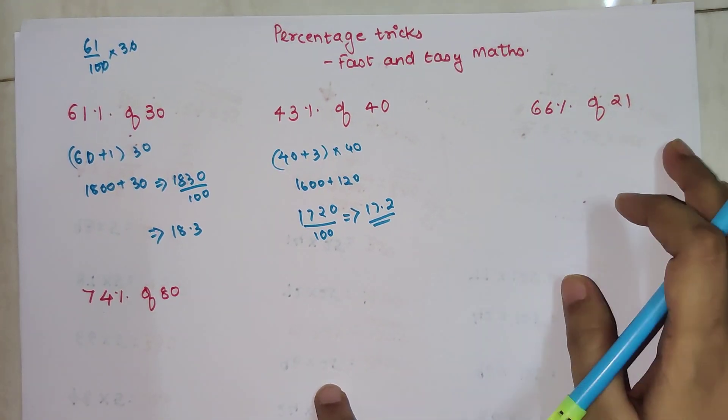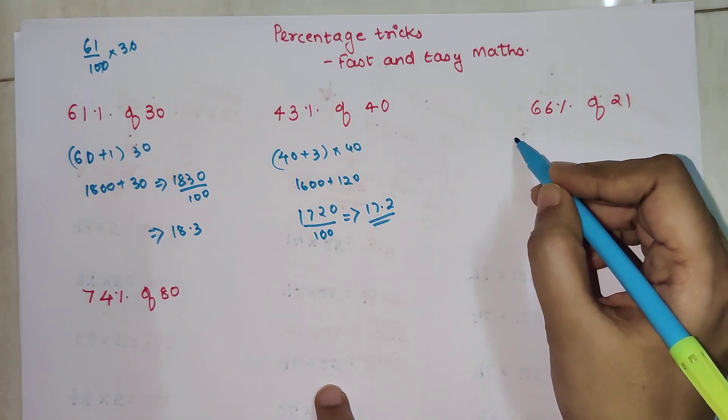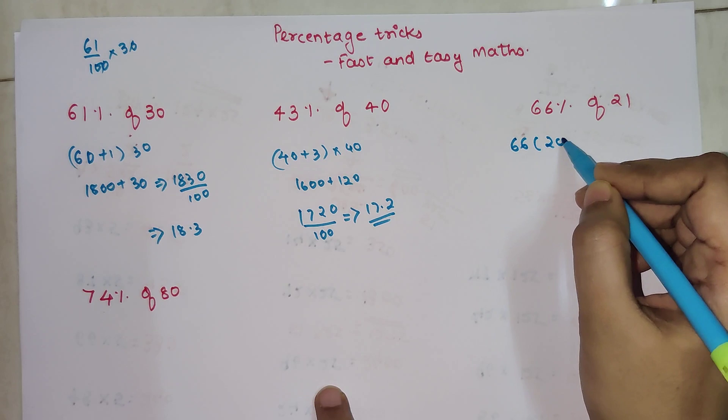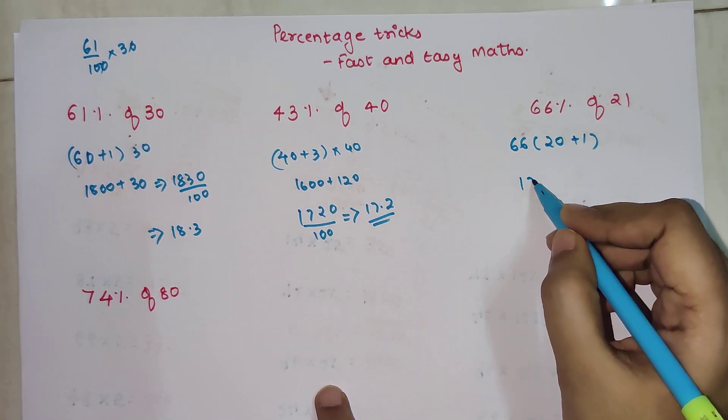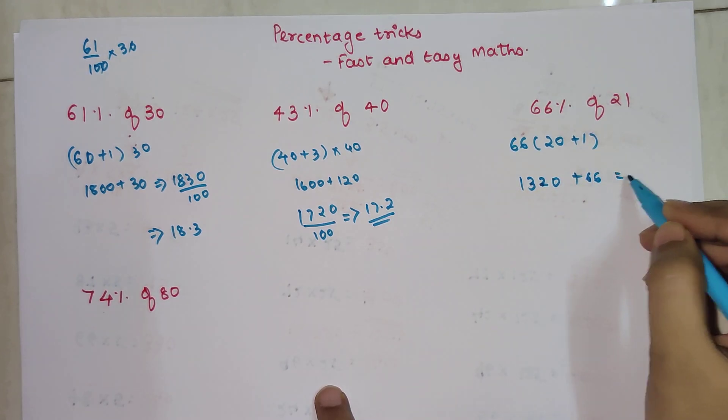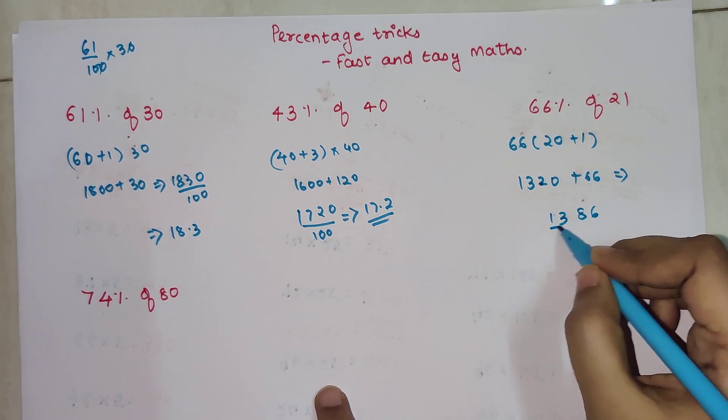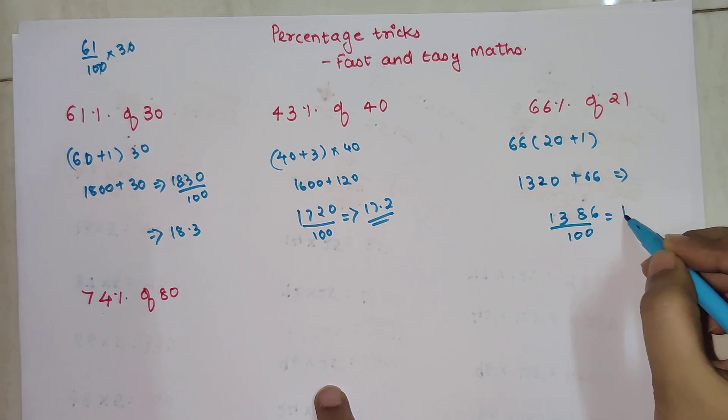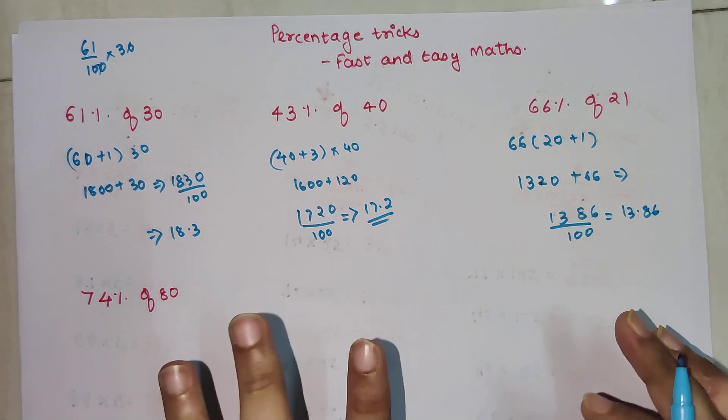In this case, I'm doing 66 into 20 plus 1. When you multiply 66 by 20 I get 1320 plus 66. This is going to get you 1386 divided by 100. My answer is going to become 13.86.